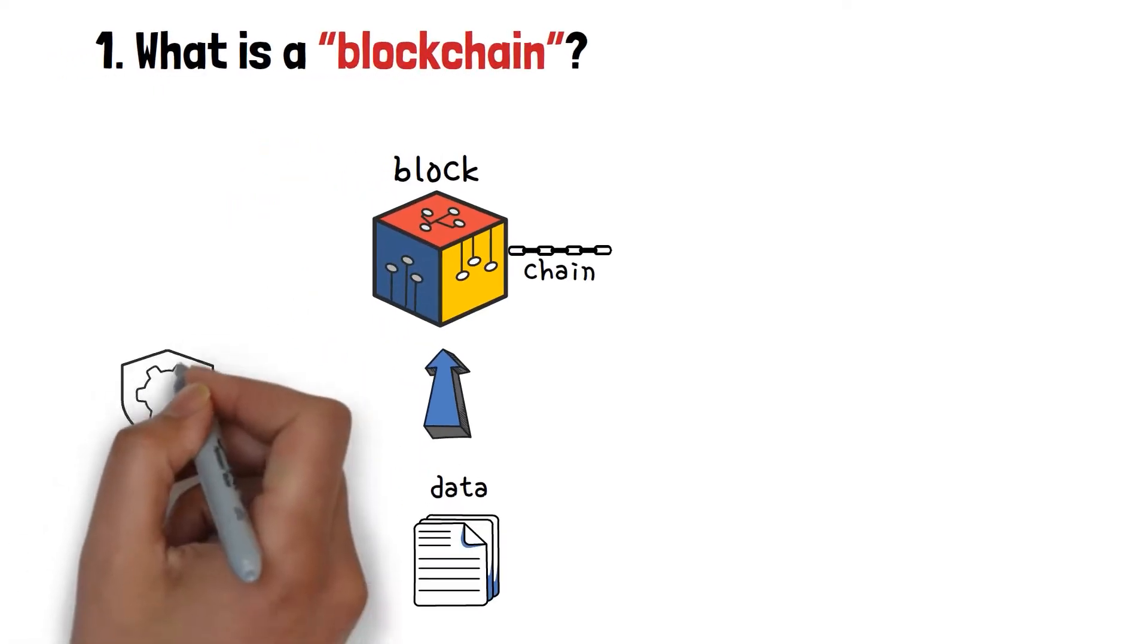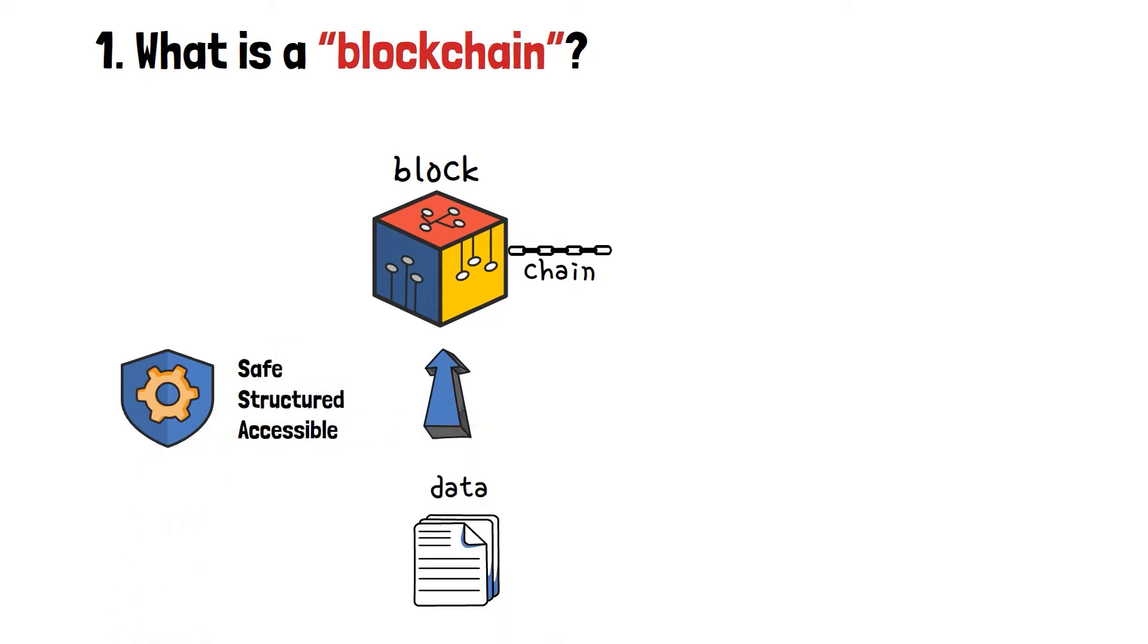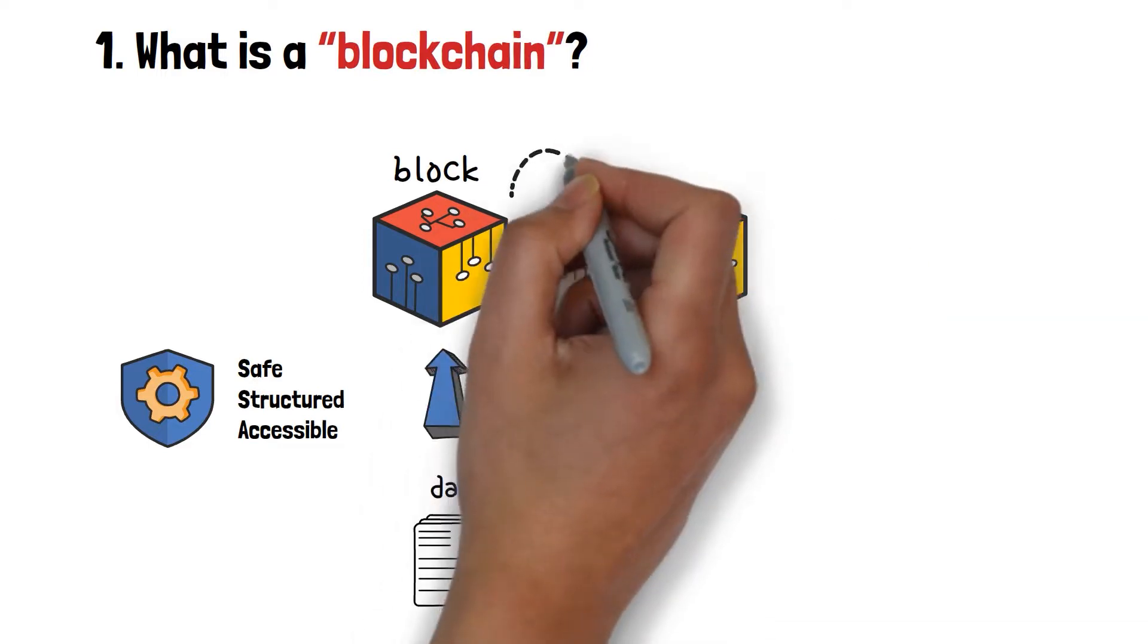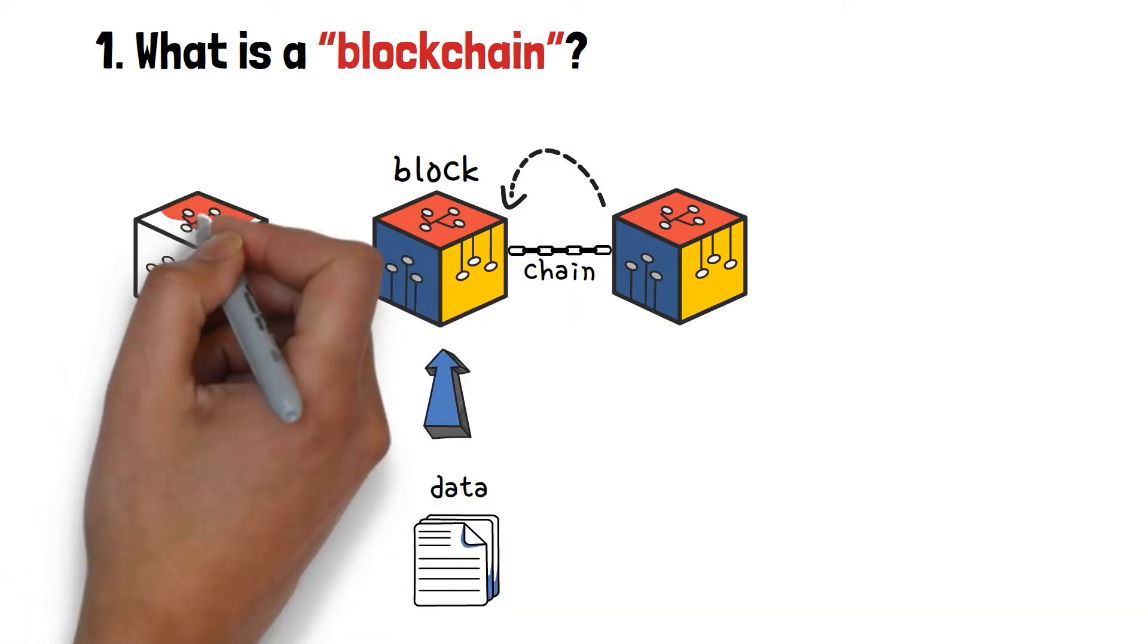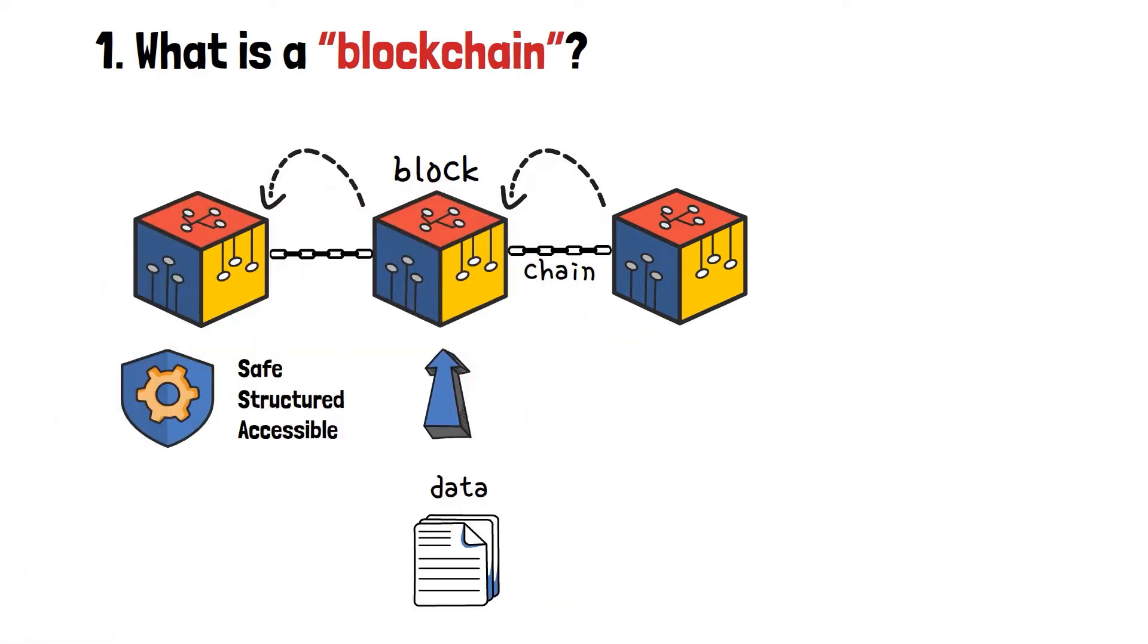Data is stored in blocks in order to keep it safe, structured, and easily accessible. What about the chain part? Each block has information about the block previous to it, and this forms the connection, or a chain, between each block standing nearby, like in a physical chain.